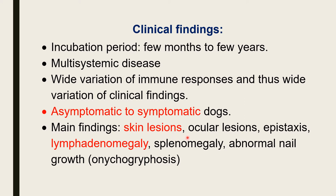The main findings are mainly the skin lesions. About 50% of cases show ocular lesions. Some cases show epistaxis, and many cases show lymphadenomegaly — enlargement of the lymph nodes. There is also enlargement of the spleen, splenomegaly. A few cases, about 5 to 10%, show abnormal nail growth, that is onychogryposis.